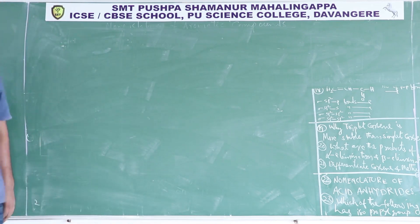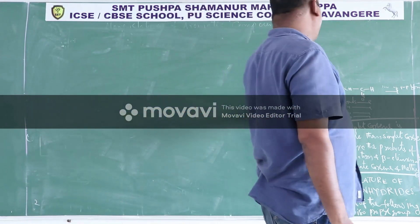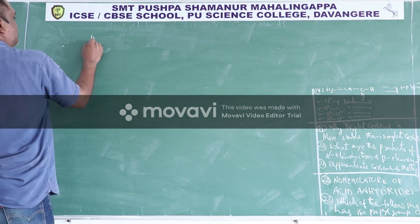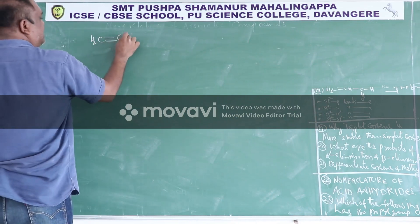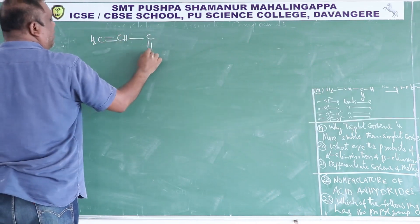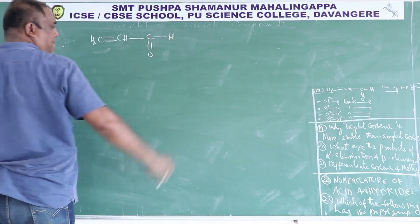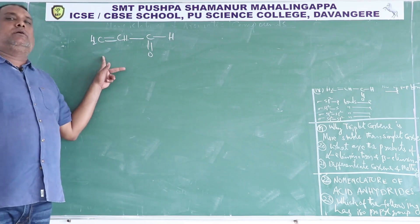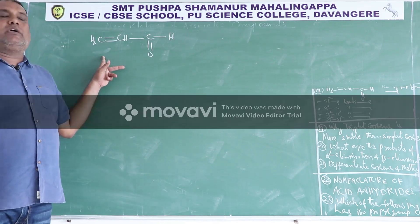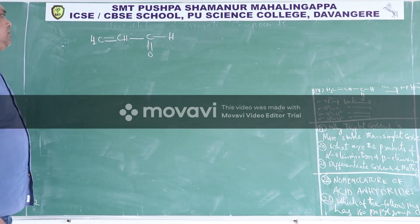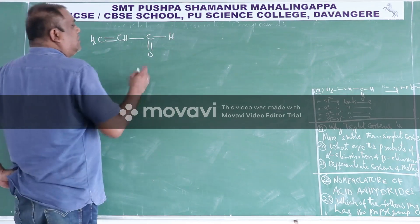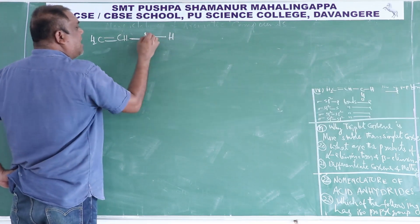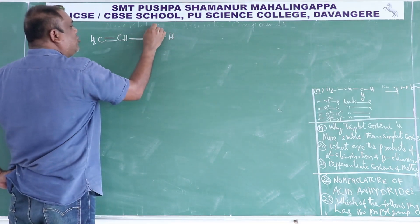After that, question number 18. The structure is H2C double bond CH, C double bond O-H. This question is based on the topic of structure and bonding in organic molecules. The first carbon is forming a double bond and two single bonds, so this carbon is SP2 hybridized.